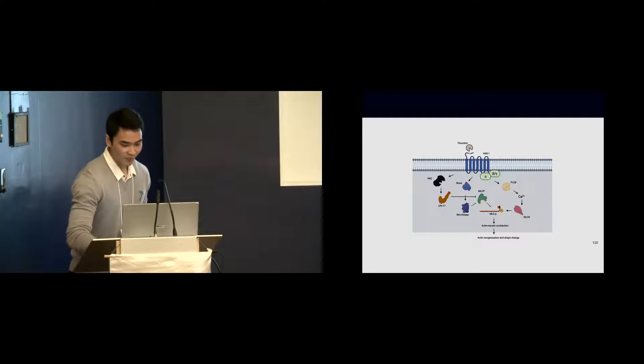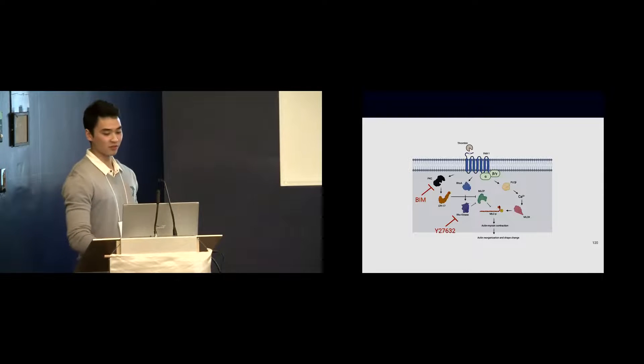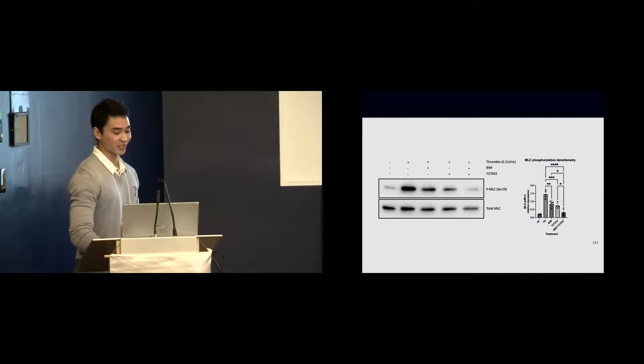Since both PKC and Rho kinase are regulating the MLC phosphatase, theoretically, if I inhibit both of these proteins, it would only partially lower the MLC phosphorylation because it could be rescued by the MLC kinase pathway. However, that's not what I observed. By doing another Western blot experiment, if I individually inhibit PKC alone, partial lowering of MLC phosphorylation is observed. And similarly, when I inhibit Rho kinase with Y27632 alone, partial lowering of MLC phosphorylation is observed.